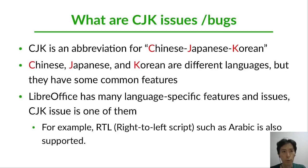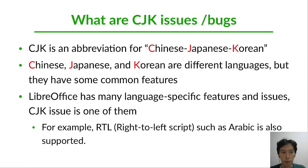What are CJK issues? CJK is an abbreviation for Chinese, Japanese, and Korean. These are different languages, but they have some common features. LibreOffice has many language-specific features and issues. CJK issues is one of them. For example, RTL such as Arabic is also supported.